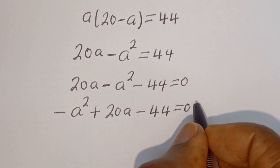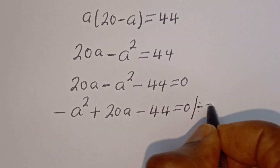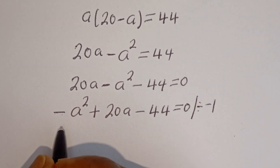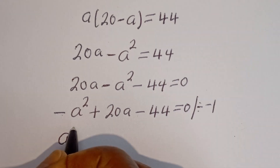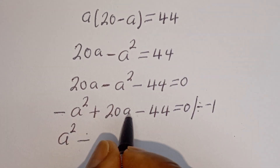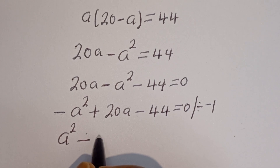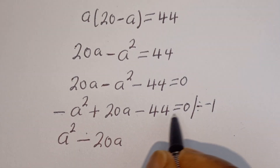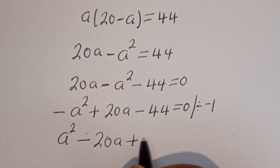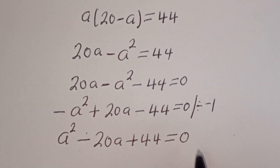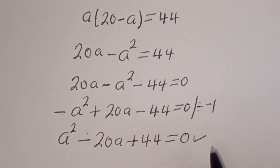Now let's divide all through by minus 1. Minus a squared divided by minus 1 gives a squared; plus 20a divided by minus 1 gives minus 20a; minus 44 divided by minus 1 gives plus 44, is equal to 0. This is a quadratic equation, which can be solved using the quadratic general formula.